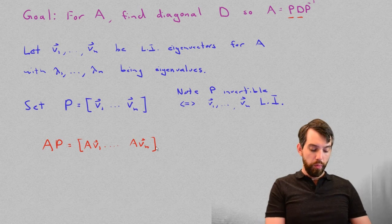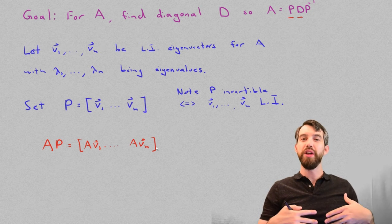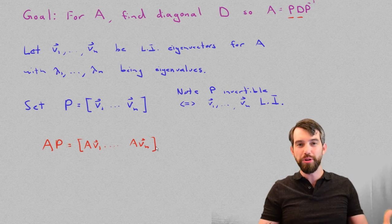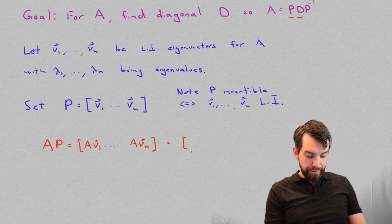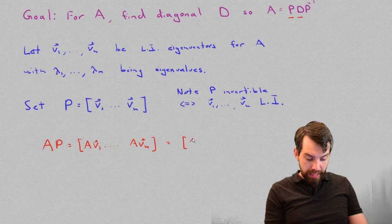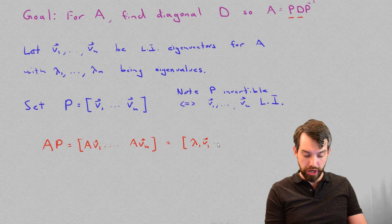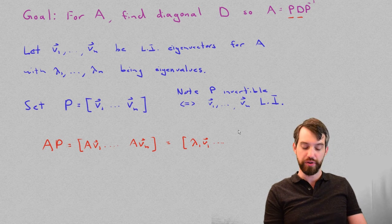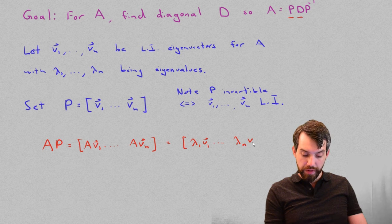But we know what A does to an eigenvector. It just spits out the eigenvalue multiplied by that eigenvector. In other words, this matrix, the first column, the A v1, is just going to become the lambda 1 v1. In other words, the eigenvalue associated with the eigenvector v1 all the way down to lambda n vn.